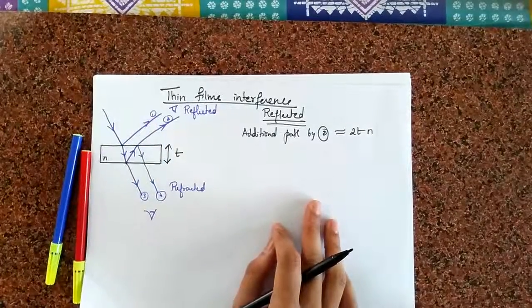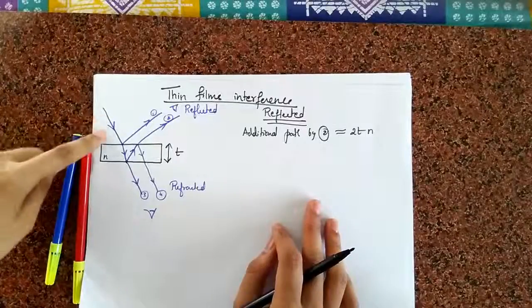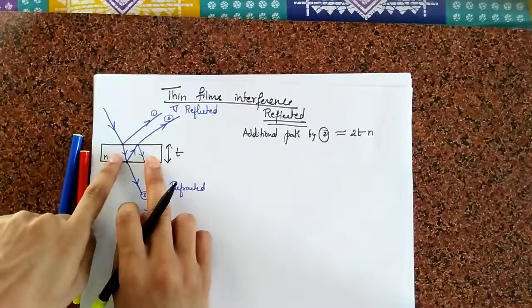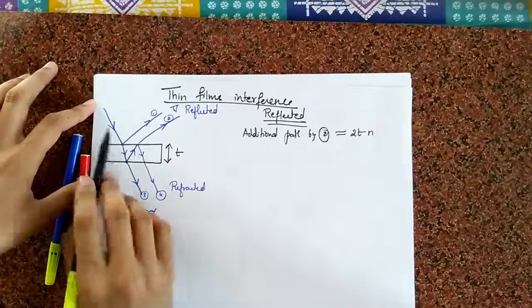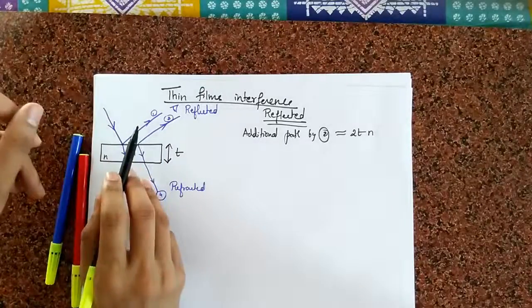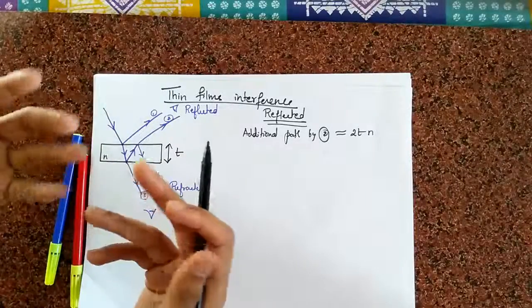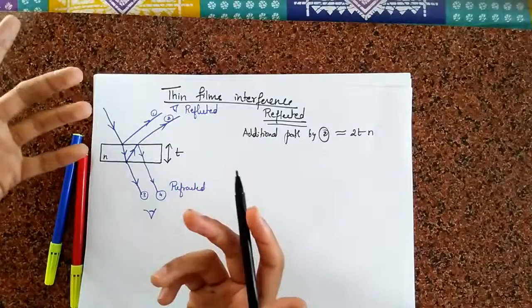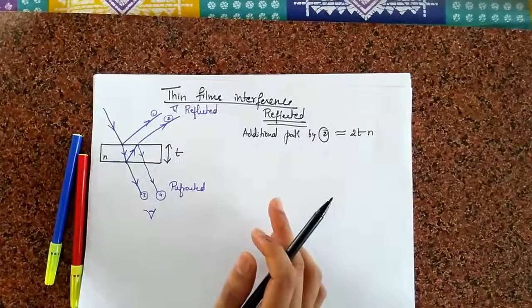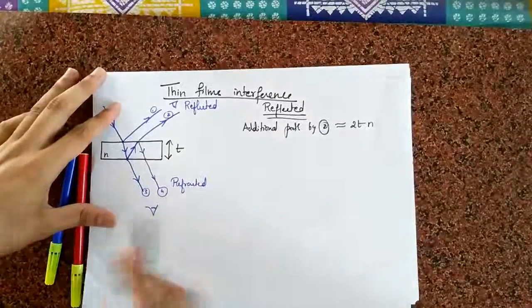What about the first one? Well, the first one also does something a little crazy. Because the light is bouncing off a denser medium. See, this is a denser medium, and this is the rarer one. So, this light beam is bouncing off a denser medium. When that happens, this light beam undergoes an additional path. It undergoes a phase shift of pi by two. To give you an example as to what happens. Sorry, not pi by two. It undergoes a phase shift of pi.